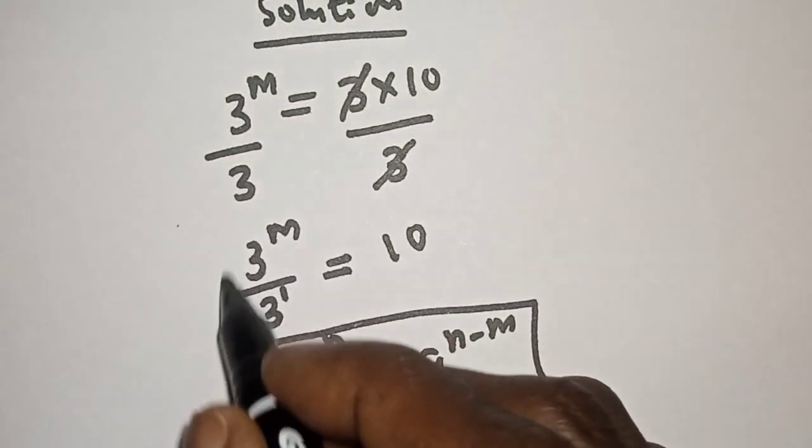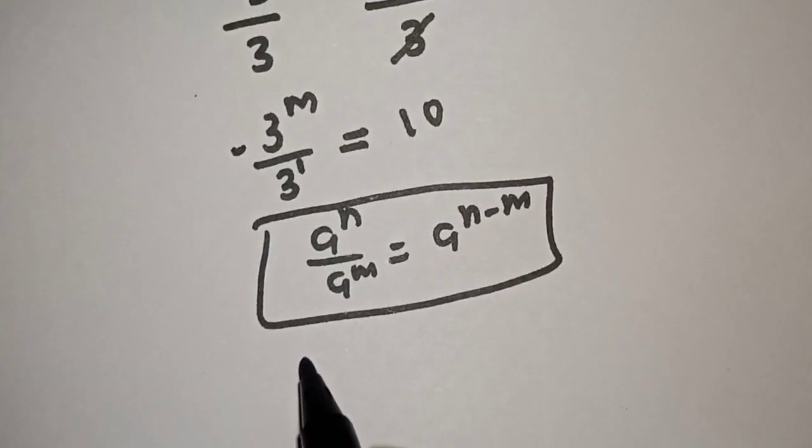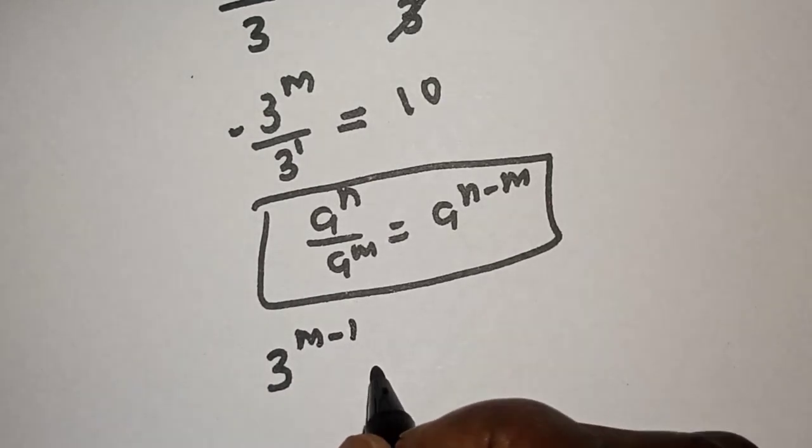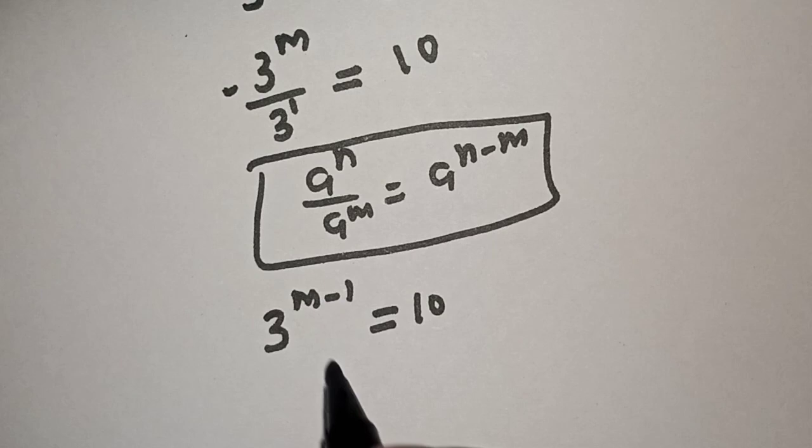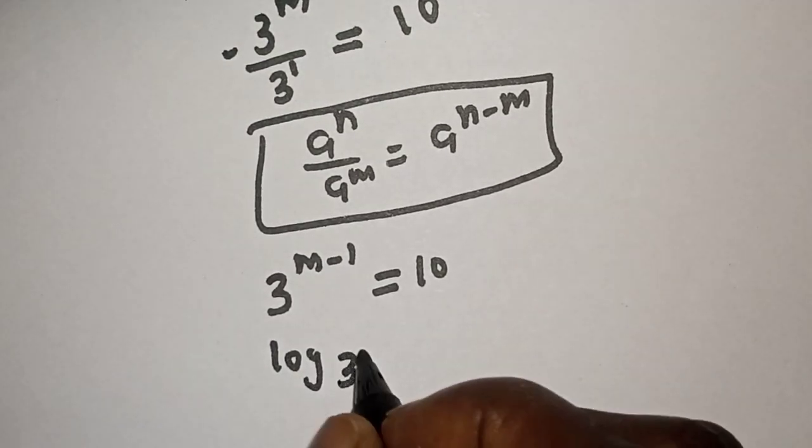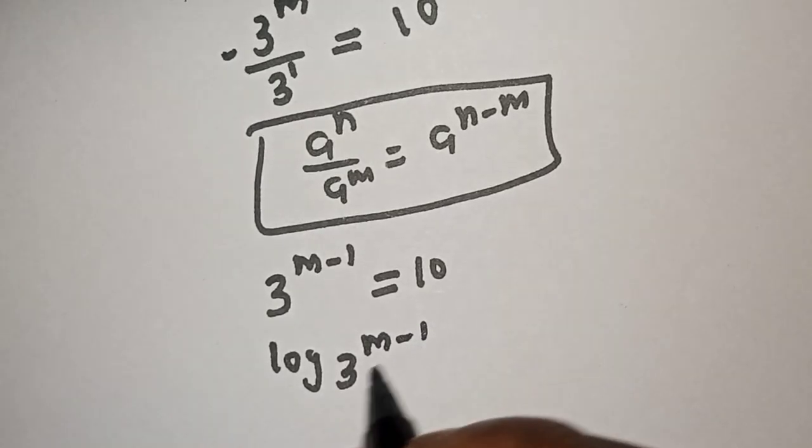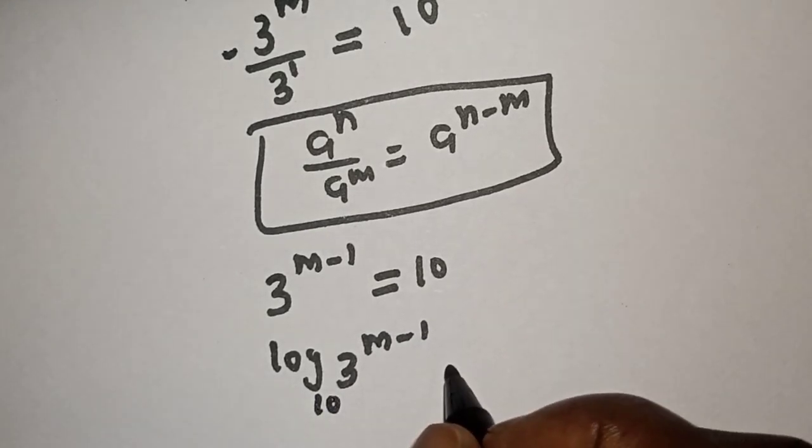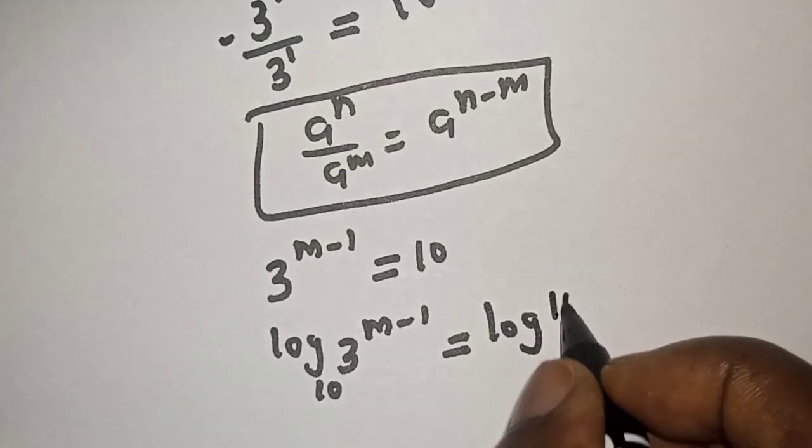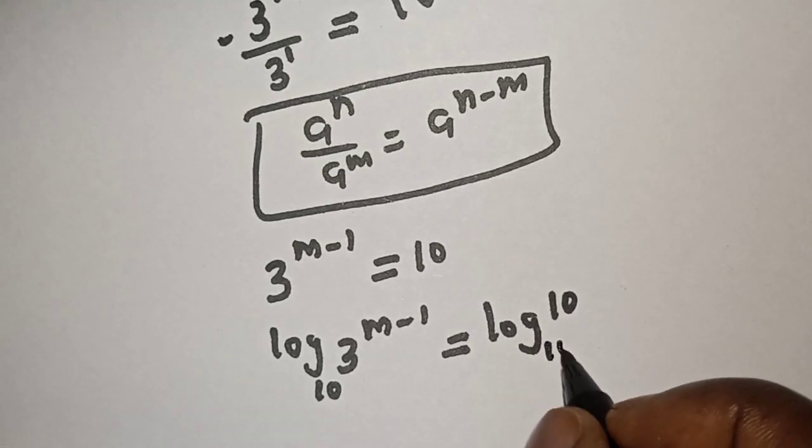So this can be written as 3 raised to power m minus 1 is equal to 10. Let's take the log of both sides. Log 3 raised to power m minus 1, using base 10, is equal to log 10 base 10.